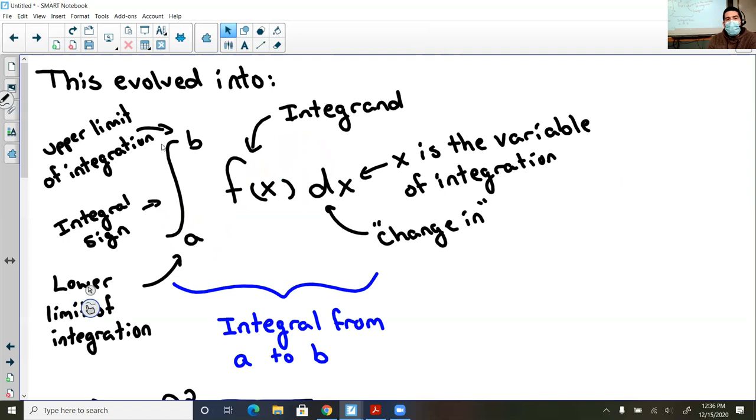So then what Riemann sums was later evolved into was this symbol here, and I apologize, I have all the labeling, but it is this little elongated s, with a number at the bottom, a number at the top, a function with the change or in the respect to a variable. This is all a definite integral, it's called a definite integral, because it's definitely starting and it's definitely stopping.